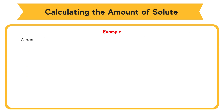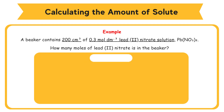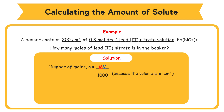Example: A beaker contains 200 cm³ of 0.3 mol/dm³ lead(II) nitrate solution, Pb(NO₃)₂. How many moles of lead(II) nitrate is in the beaker? Solution: N equals MV over 1000, because the volume is in cm³. N equals 0.2 mol/dm³ times 200 cm³ over 1000, equals 0.04 mol of Pb(NO₃)₂.